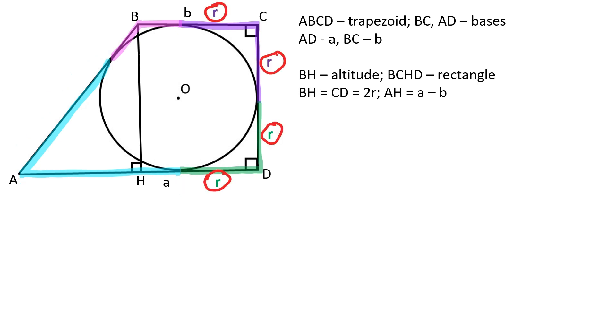The green and purple segments are equal to the radius of the circle, therefore the pink segments are equal to B minus the radius.